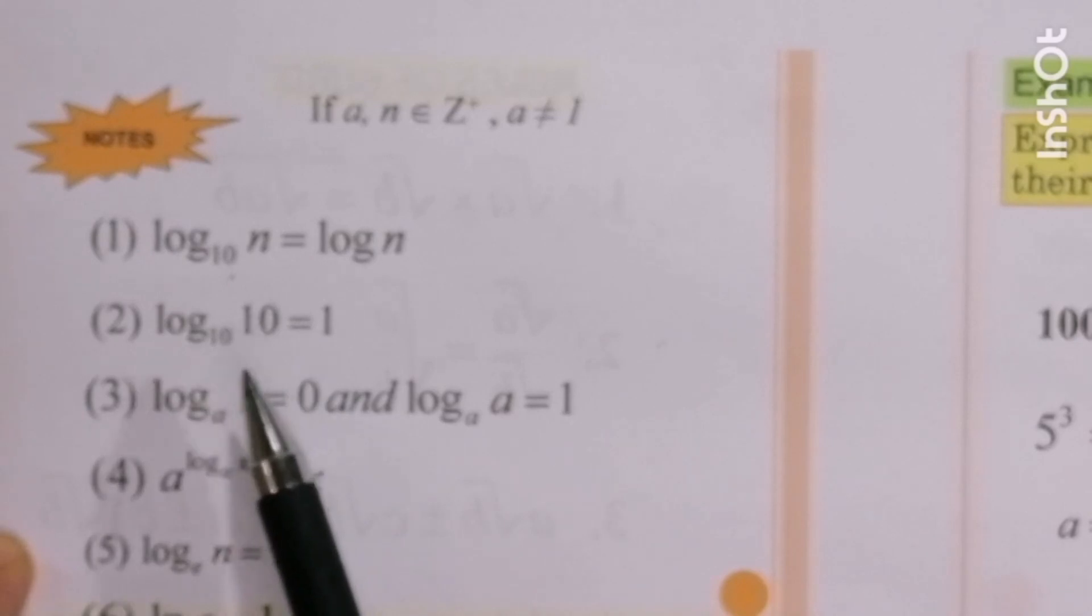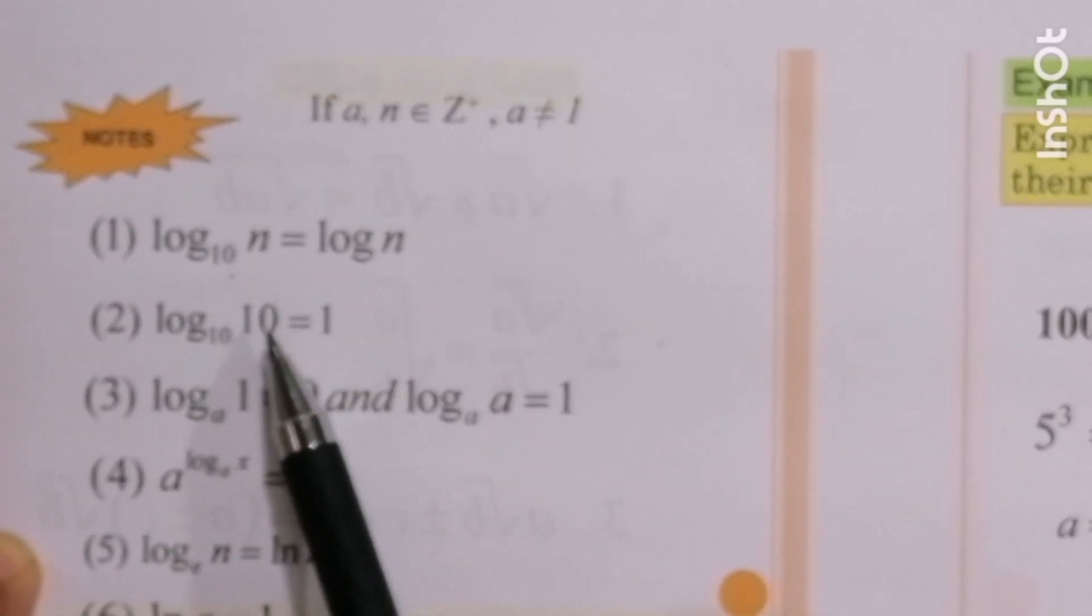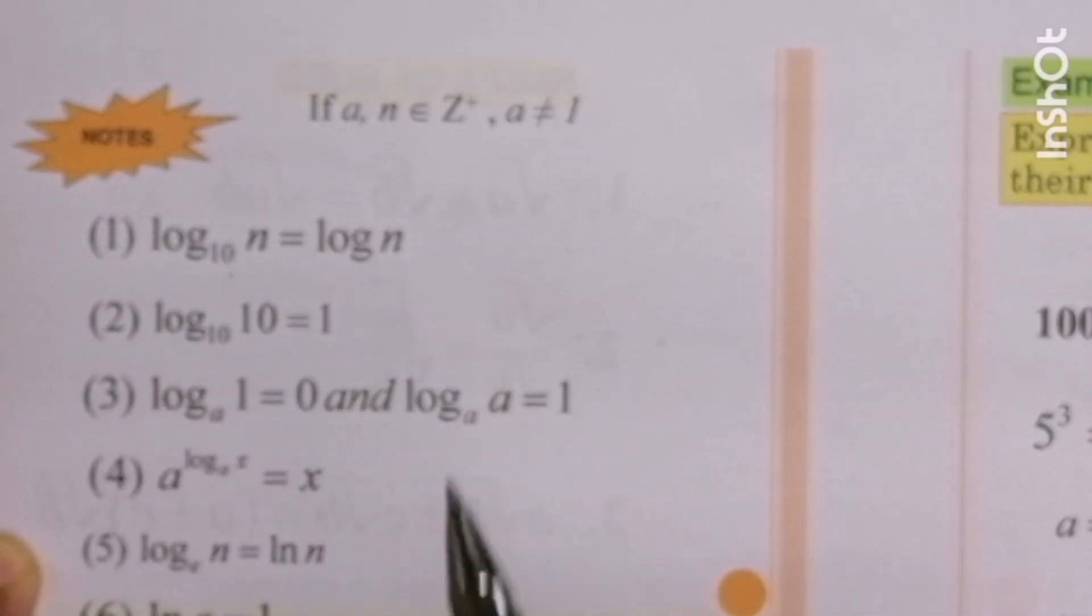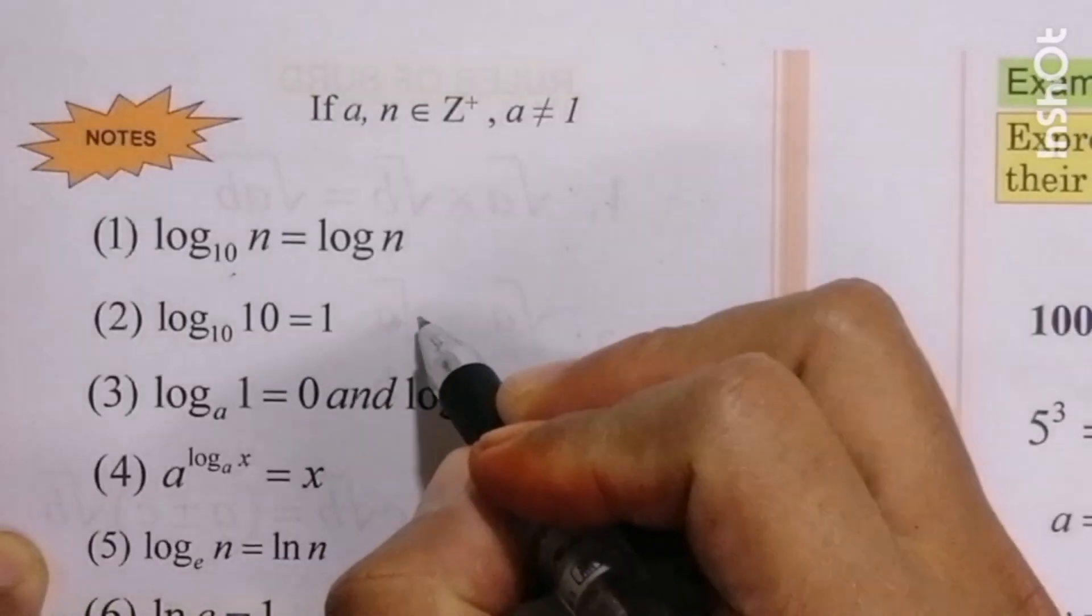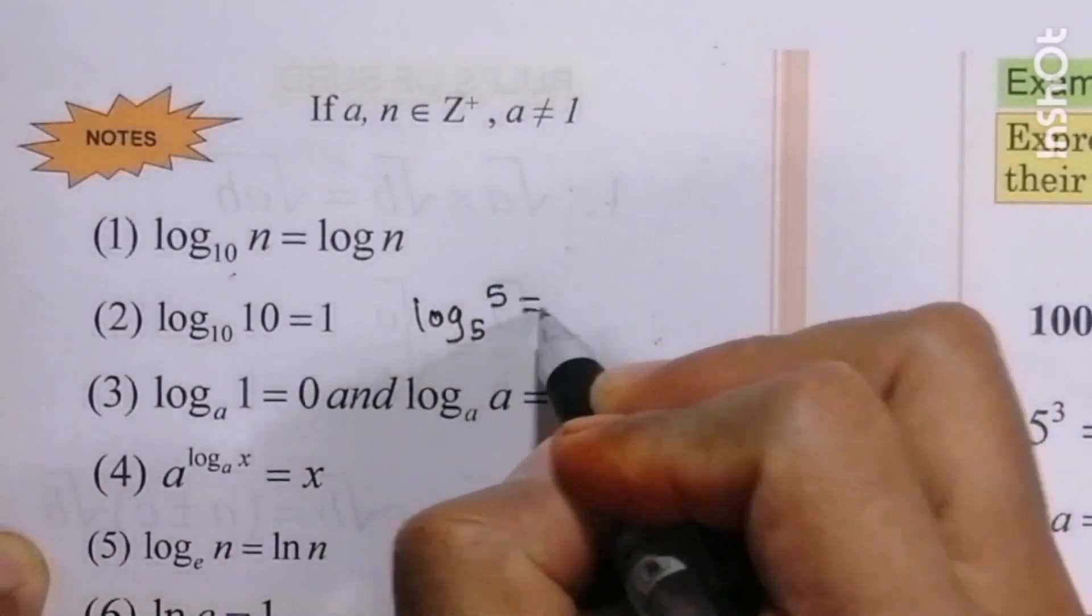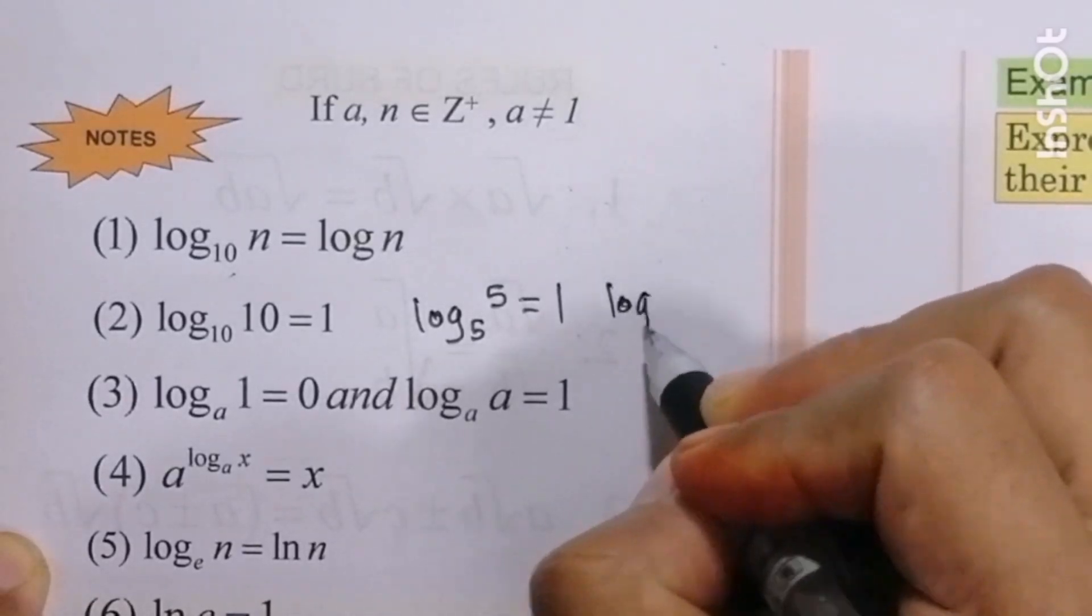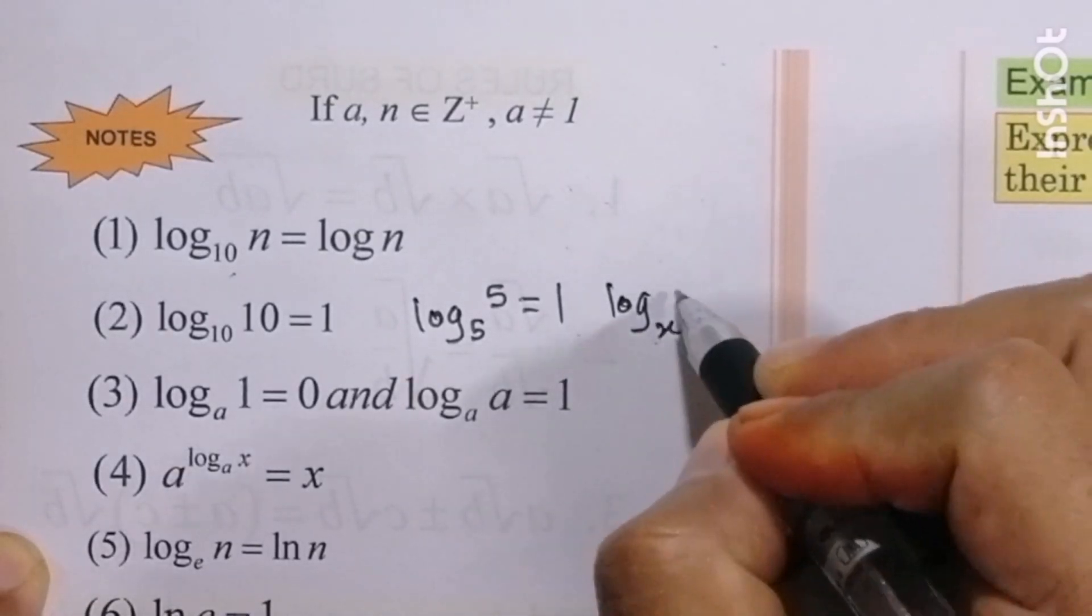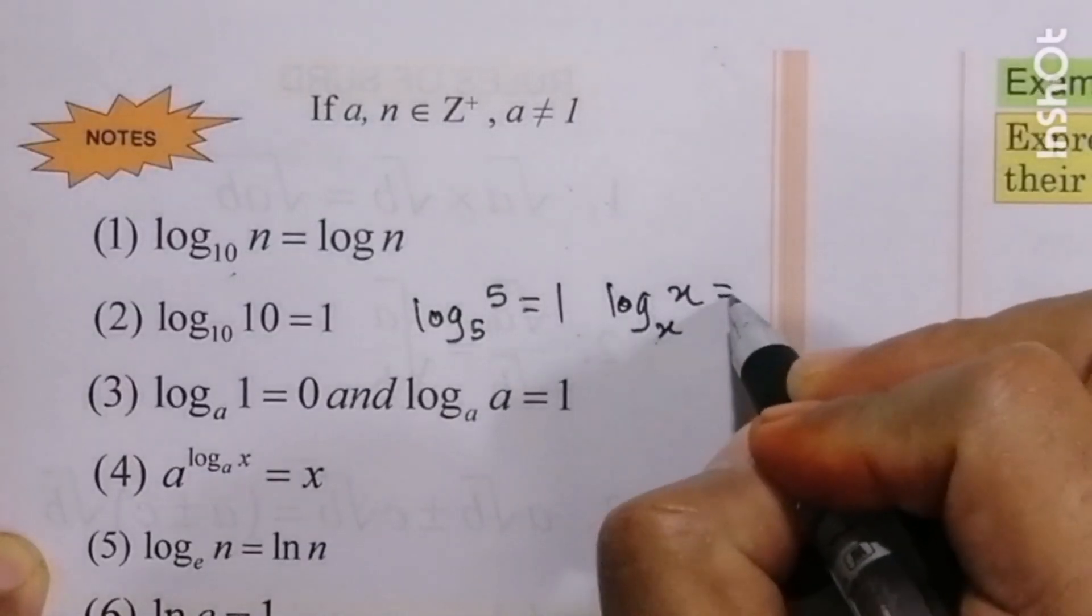Number 2: log 10 base 10 equal to 1. For example, log 5 base 5 equal to 1, log x base x also equal to 1.